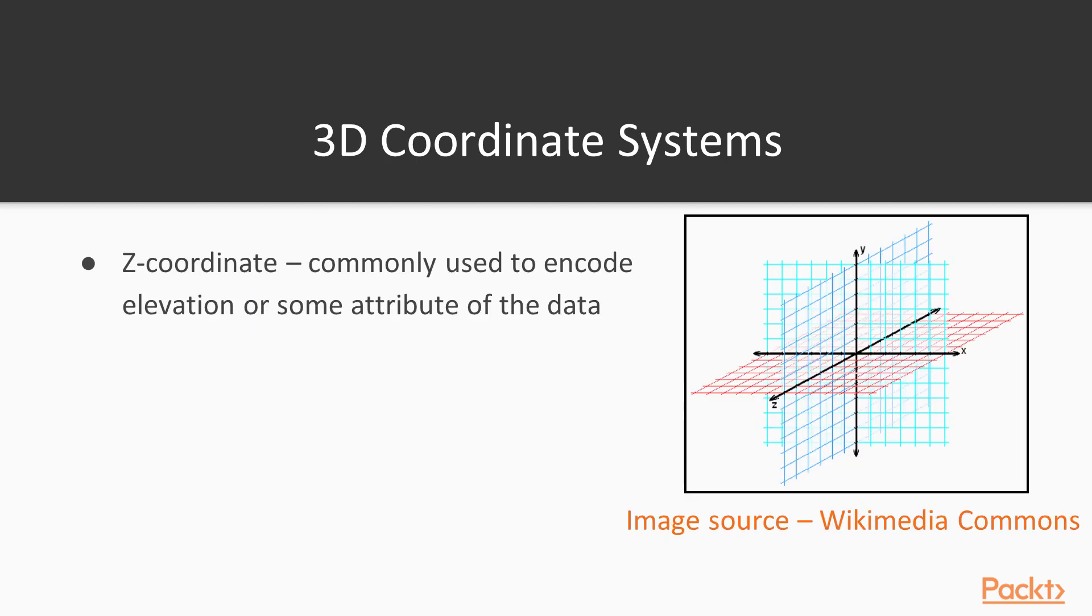To model data in three dimensions, we need some sort of description of a Z coordinate. Z coordinates in GIS are commonly used to encode elevation or some other attribute of interest in our dataset. Elevation makes sense, certainly, if we're thinking about modeling a landscape.